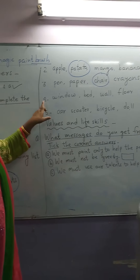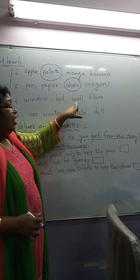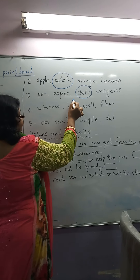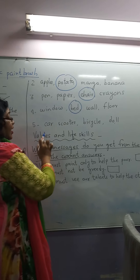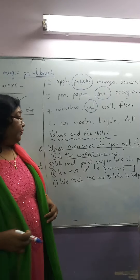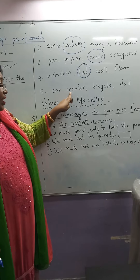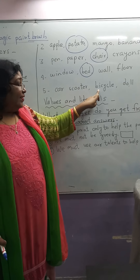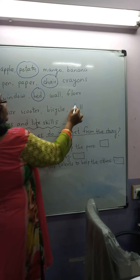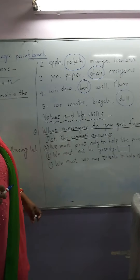Number 4: window, bed, wall, floor. Which is the odd one? Bed — and all these others are parts of a house. Number 5: car, scooter, bicycle, doll. And the odd one is doll, because all the others are means of transport.